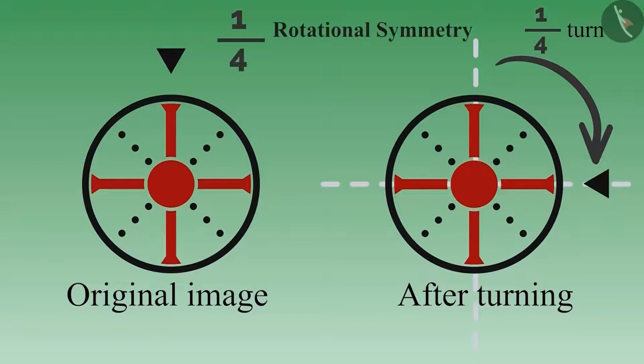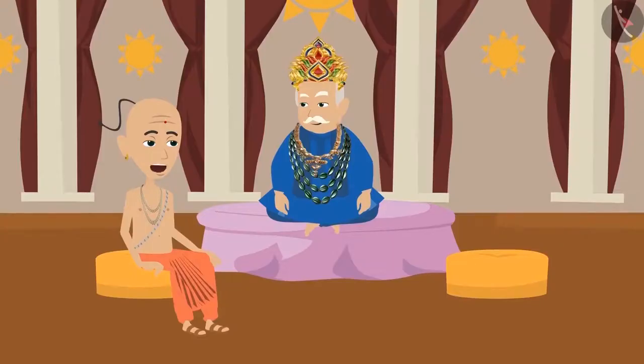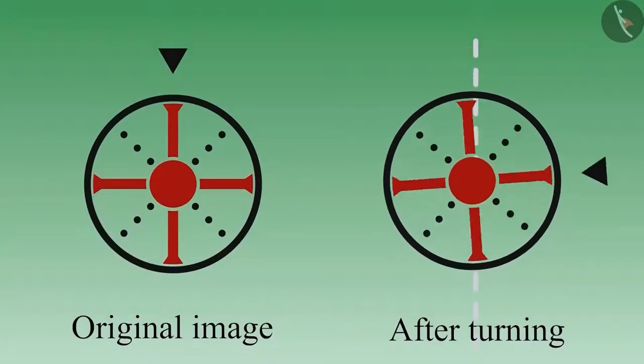This is called one-by-fourth rotational symmetry. Your Highness, we will get a similar image if we rotate it by half. To find this out, let's turn it and see.